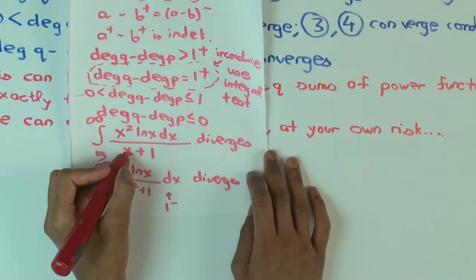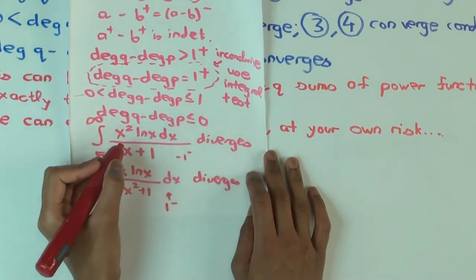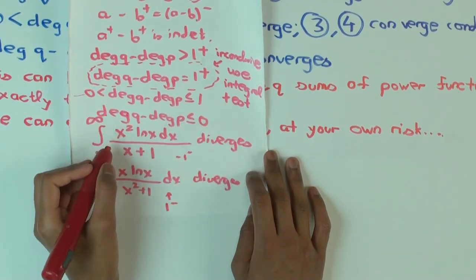Here, oh, but we can try the degree. What is the degree difference here? So it's minus 1 minus. Right? So these two diverge.